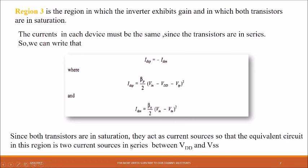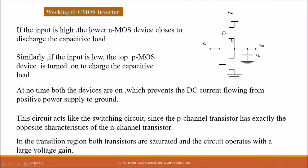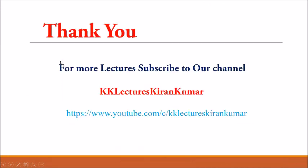Since both transistors are in saturation and acting as current sources, the equivalent circuit connects VDD and VSS through two current sources in series, and the inverter exhibits maximum gain in Region 3.